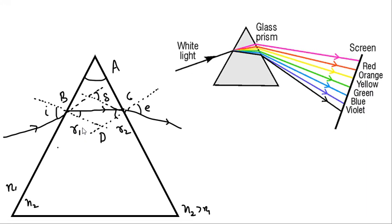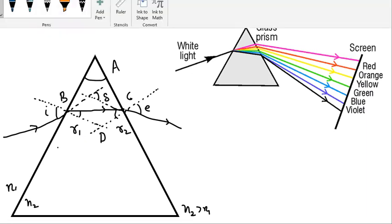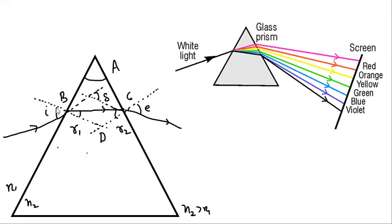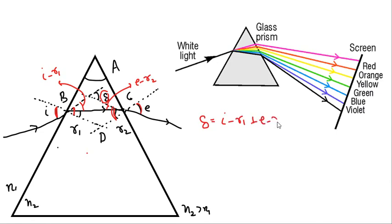In this figure, this full angle is angle of incidence i, but this part is r1, so this angle will be i minus r1. Similarly, this full angle is e, but this part is r2, so this angle will be e minus r2. Now, exterior angle is equal to the sum of opposite interior angles. So δ will be equal to (i − r1) + (e − r2), which gives δ = i + e − (r1 + r2).